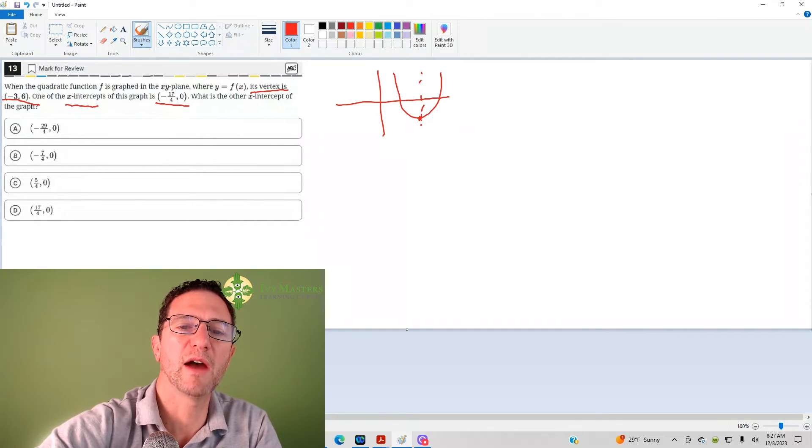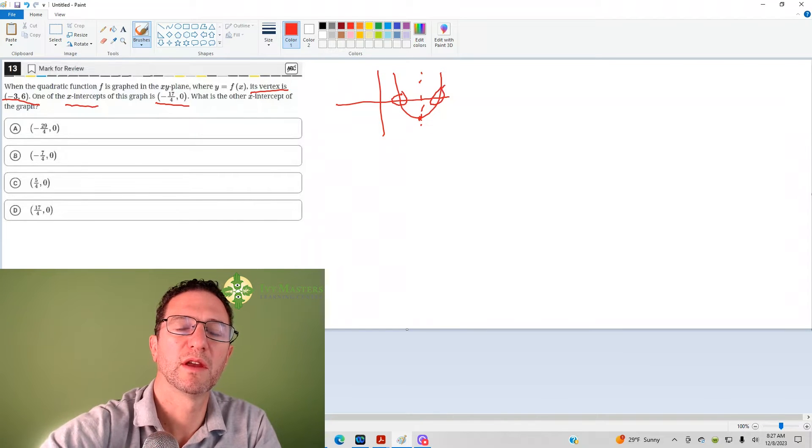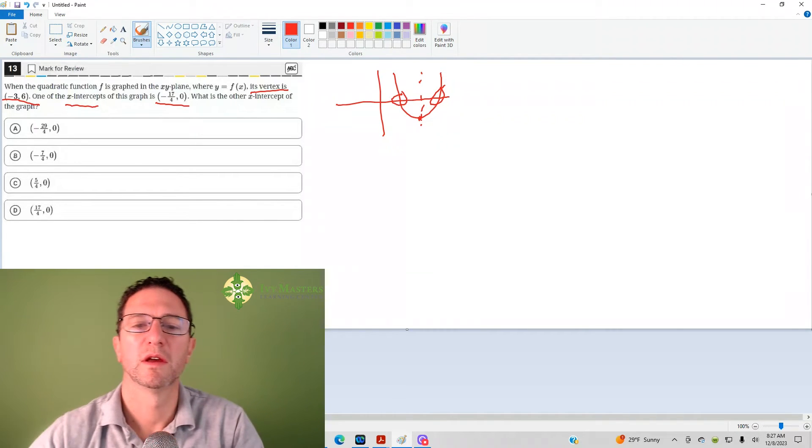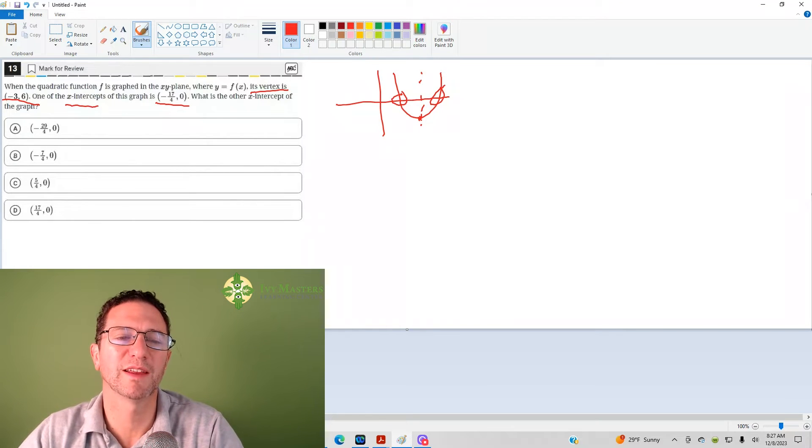That's going to be the average, it's going to be the midpoint. The x is going to be the midpoint of the two x-intercepts, and to get the midpoint you take the average.